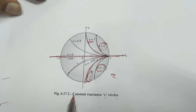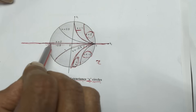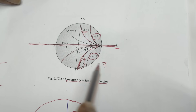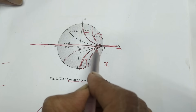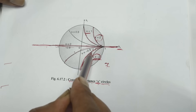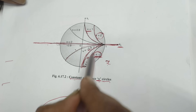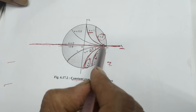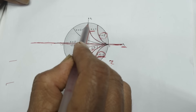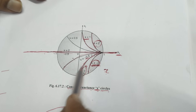The next type are constant reactance, that is X circles — these are actually arcs, not complete circles. Refer to the horizontal line: below the horizontal line, values of X (reactance) are negative. For example, arcs below the line have values like X equals minus 0.5. If the arcs are above the horizontal line, the values are positive — for example, X equals 1. So: above the horizontal line gives positive values, below gives negative values.